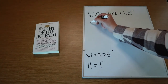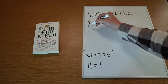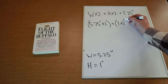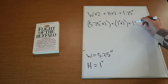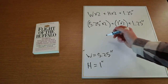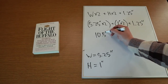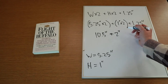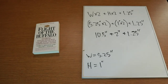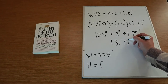Now let's plug in our values. We have width = 5.25 inches × 2, and height = 1 inch × 2, then we add 1.25 inches. So 5.25 × 2 = 10.5 inches, plus 2 inches, plus 1.25 inches. Adding this all together, we get 13.75 inches. That is our answer.